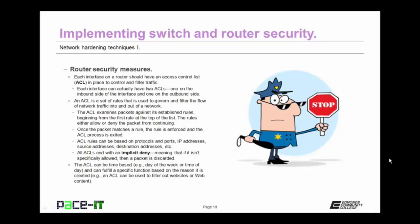Let's move on to router security measures. Each interface on a router should have an access control list, or ACL, in place to control and filter traffic. Each interface can actually have two ACLs — one on the inbound side and one on the outbound side. An ACL is a set of rules used to govern and filter the flow of network traffic into and out of a network. The ACL examines packets against its established rules, beginning from the first rule at the top of the list and continuing down. The rules either allow or deny the packet from continuing. Once the packet matches a rule, the rule is enforced and the ACL process is exited. ACL rules can be based on protocols and ports, IP addresses, source addresses, destination addresses, etc. All ACLs end with an implicit deny statement, meaning that if it isn't specifically allowed, the packet is discarded.